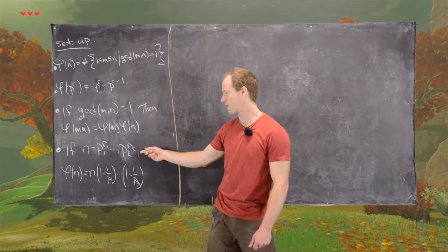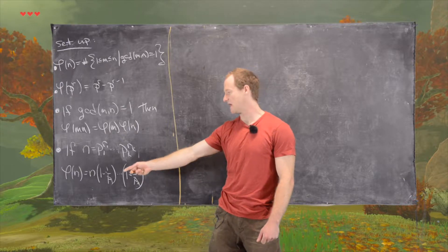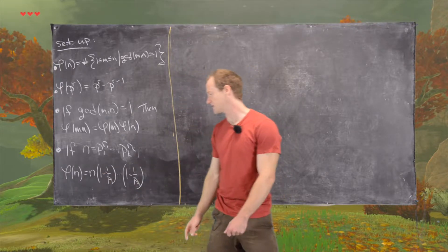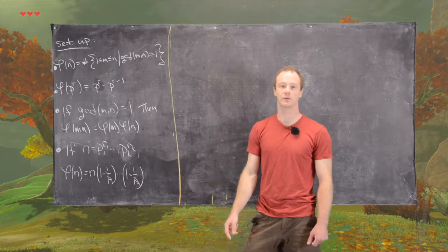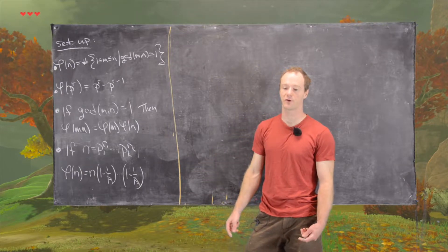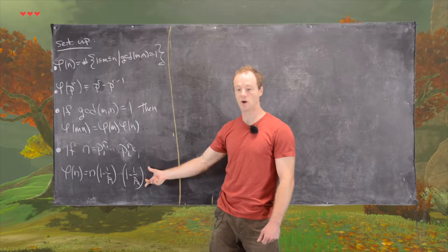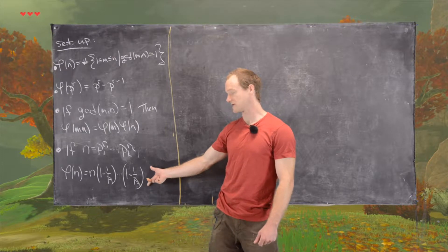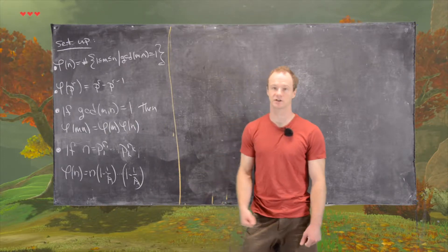And then finally, if we have a full prime factorization of n, then we know that phi of n is n times 1 minus 1 over p1 all the way up to 1 minus 1 over pk, where p1 through pk are the prime factors of n. So in fact, in this formula we actually don't need to know what the exponents are as long as we have all of the prime factors.